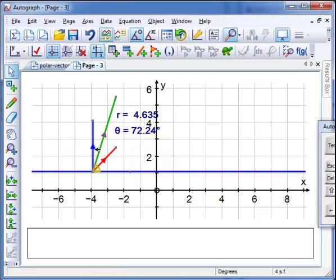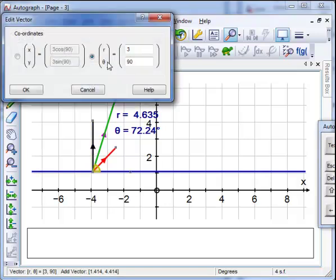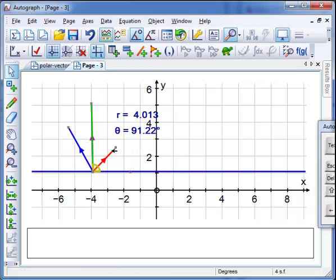So if I was, for example, to edit this vector and change it to 120 degrees, what's going to happen is that this will go around to here and the sum will move around a bit as well, and it'll all get changed. So that's the way to show the magnitude and direction of a vector in polar coordinates.